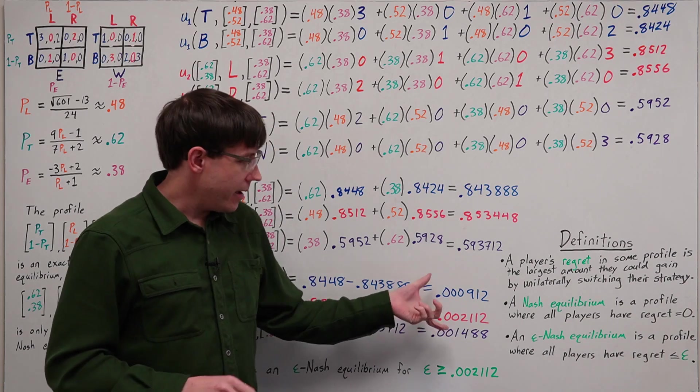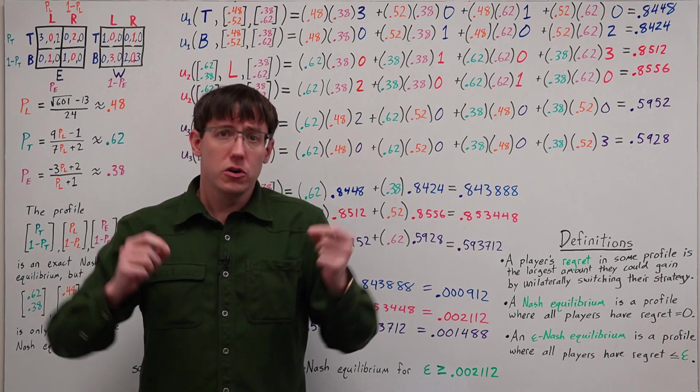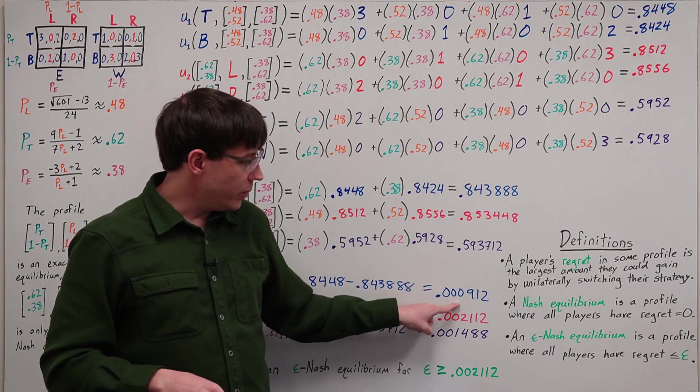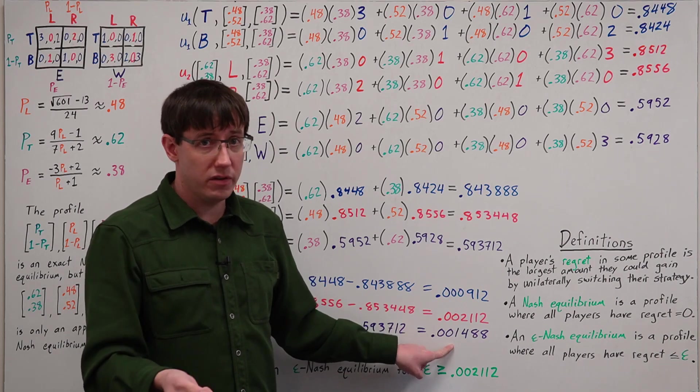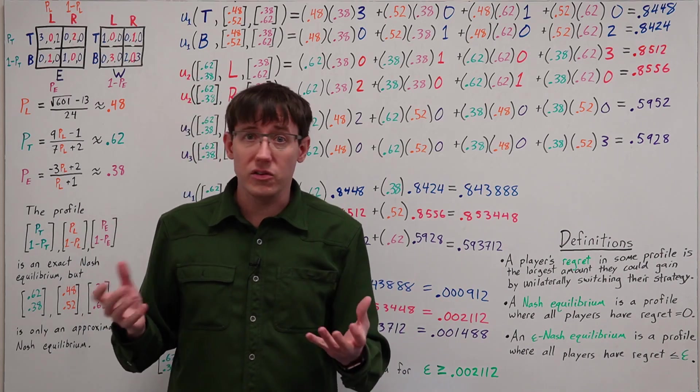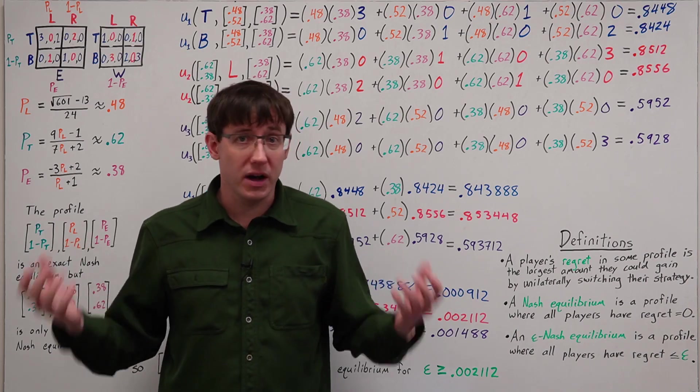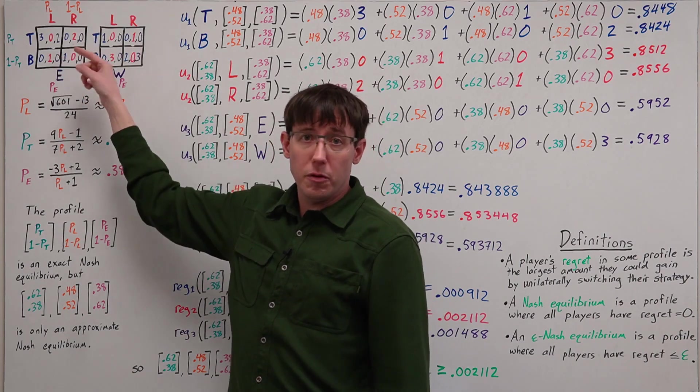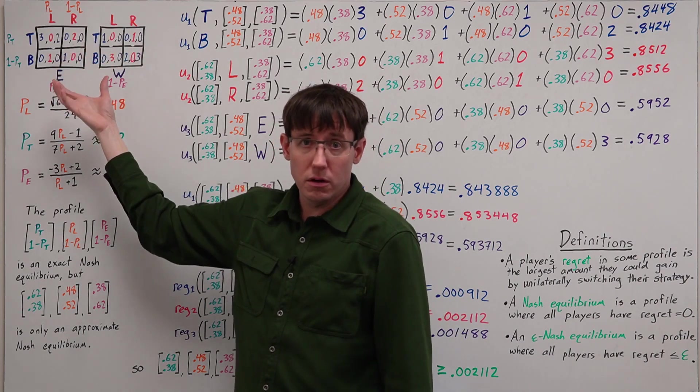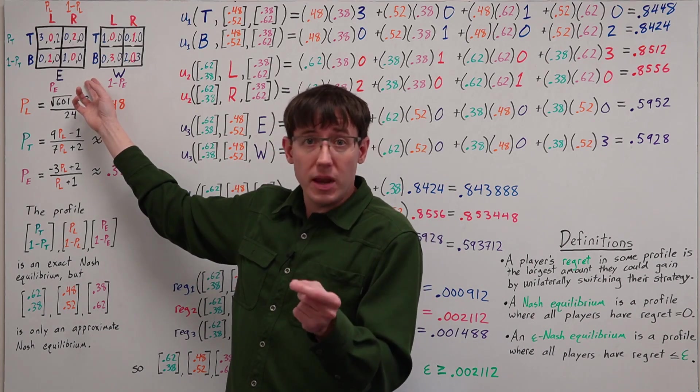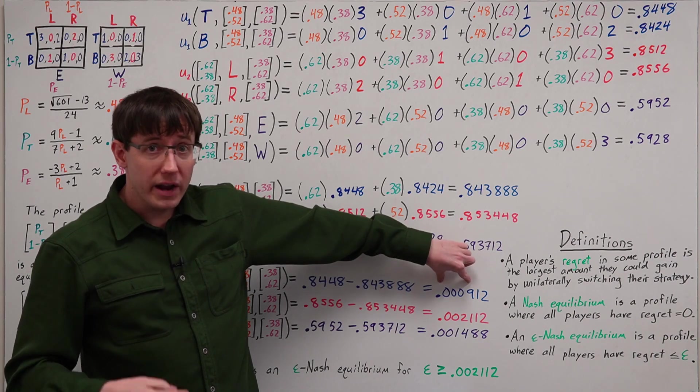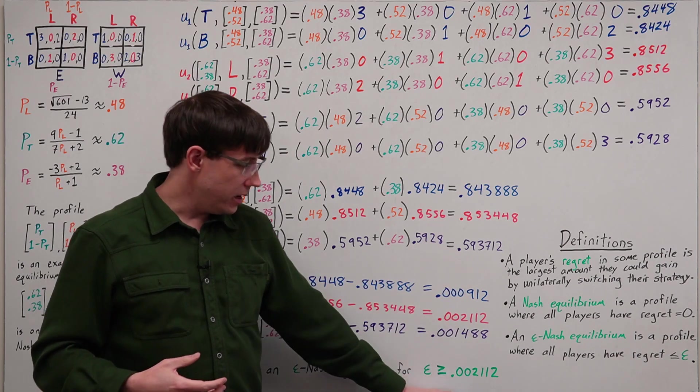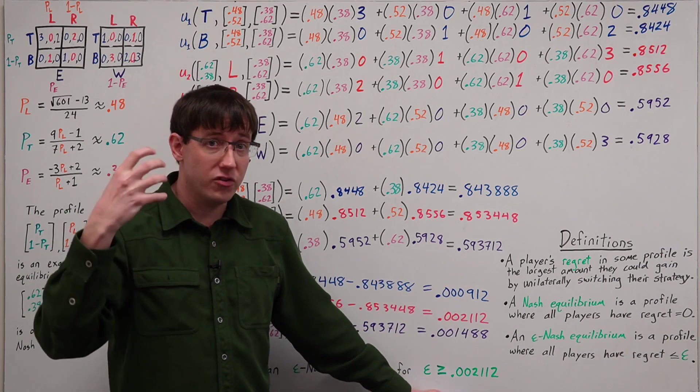But this approach of taking a maximum over the different players should ring some alarm bells, because this is fundamentally a comparison between utility values for different individuals. And we know that utilities can be scaled by arbitrary positive affine transformations. And so if I were to multiply all of player one's payoffs by a thousand, the resulting matrix would still represent the same game. But now player one's regret would be a factor of a thousand larger.